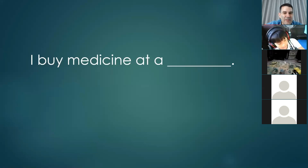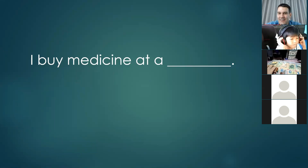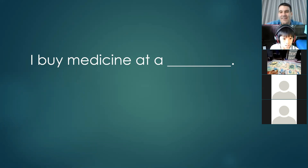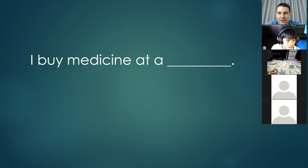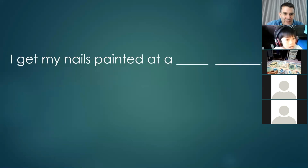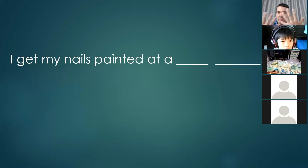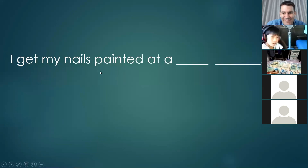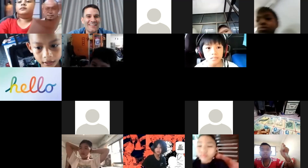How about: 'I buy medicine at a drugstore or a ___'? What is another word for a drugstore? Remember P-H makes an F sound — pharmacy. And: 'I get my nails painted at a ___' — where can you go to make your nails beautiful? Yes — nail salon. Okay, that's all the time for today. Thank you for listening and writing about places in a city!